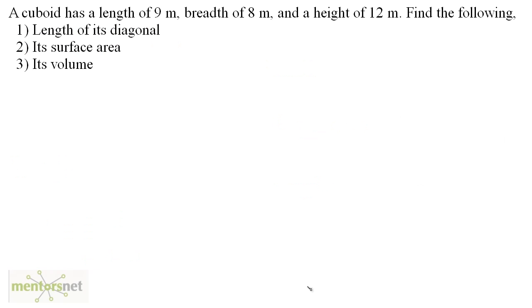So the question is, a cuboid has a length of 9 meters, breadth of 8 meters and a height of 12 meters. You have to find the following: the length of its diagonal, its surface area and its volume. Well, you already know the formulas, so this question is very easy for you.